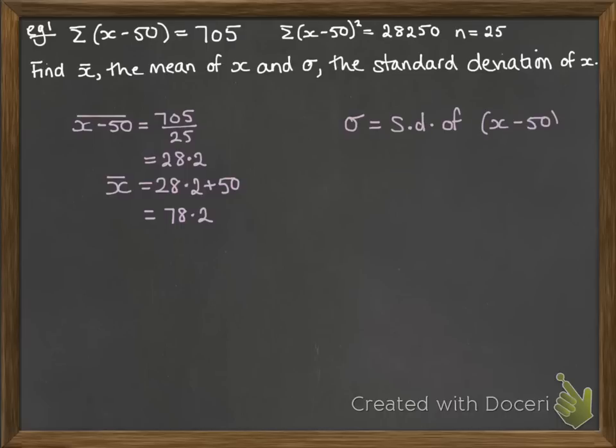The standard deviation of x minus 50 will give us the standard deviation of x, because the spread hasn't changed, just every single piece of data has been moved down by 50.